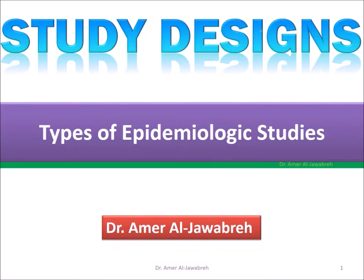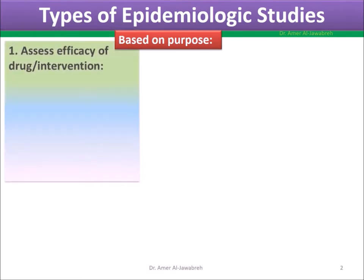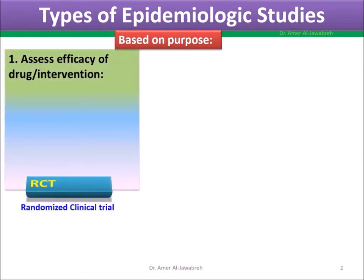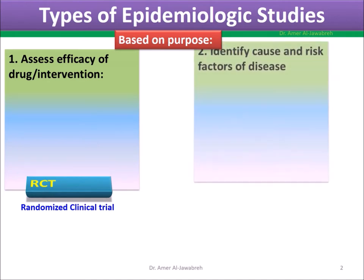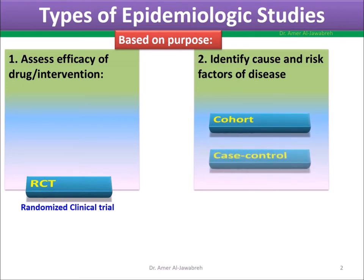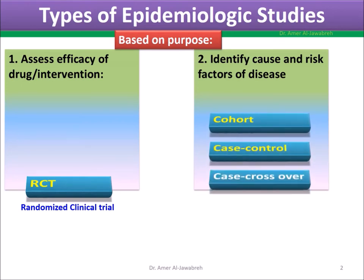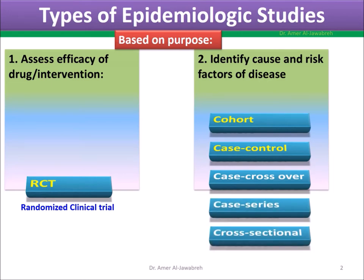Study designs: types of epidemiologic studies, classified by purpose. First, to assess efficacy, such as RCT (randomized clinical trial). Second, to identify cause and risk factors, which include cohort, case control, case crossover, case series, cross-sectional, and ecologic studies.